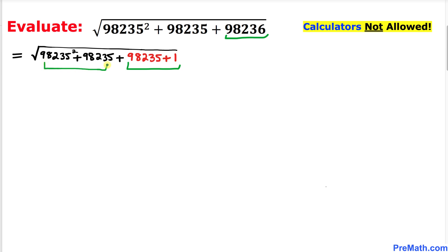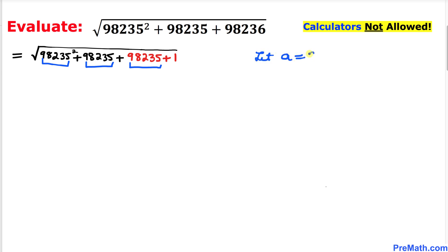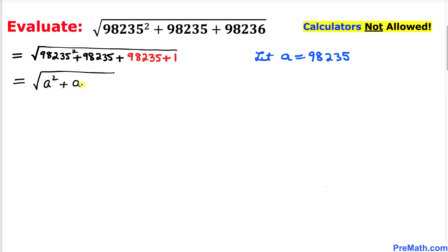Now we can see that 98^35, 98^35, and 98^35 are the same, so let me make a substitution. Let a equal 98^35. Then we can write this expression as a squared plus a plus a plus 1, and combining the like terms, this turns out to be a squared plus 2a plus 1.